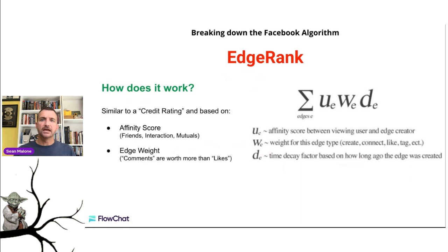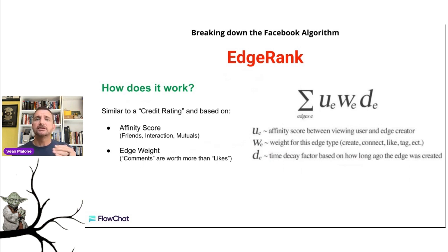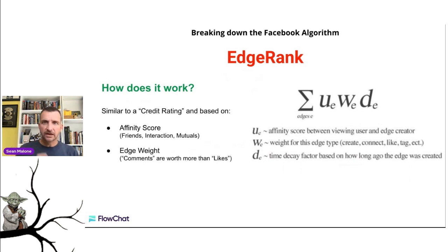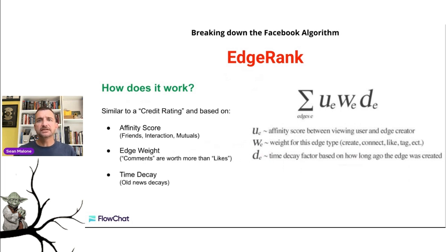Secondly is edge weight. Each edge that's created — each action somebody takes on Facebook — has a weight. For example, a long form comment on a social post is weighted heavier than just liking that particular post. Sharing a post to someone specific or a group of people specifically has more weight than liking a post. The edge weight is also considered when tweaking the algorithm in your favor.